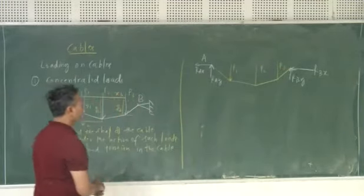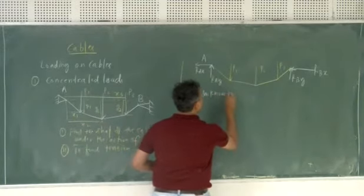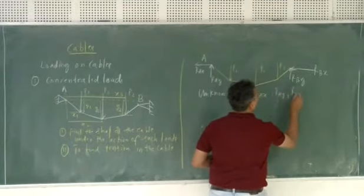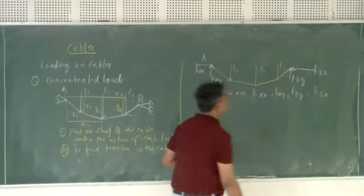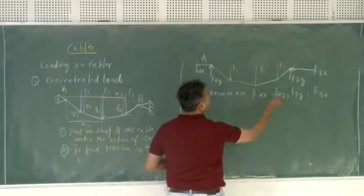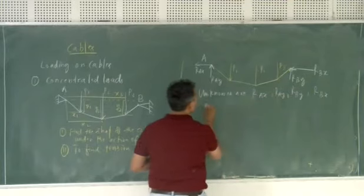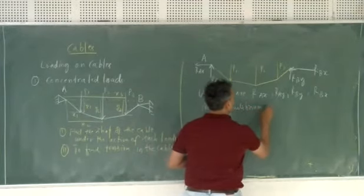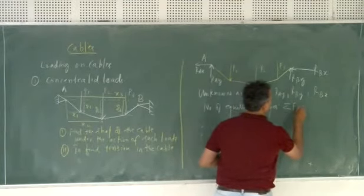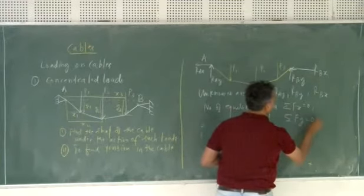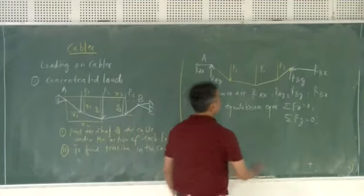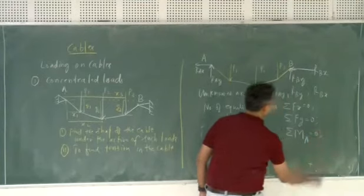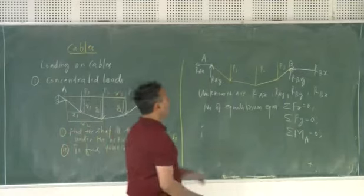How many unknowns are we having? We are having four unknowns. Using these three equilibrium equations we can't really solve for the four unknowns.